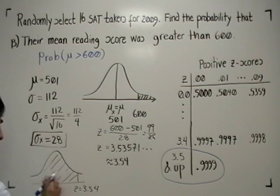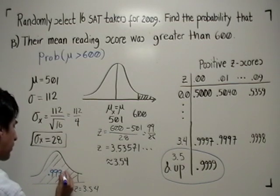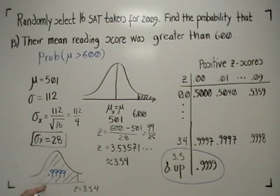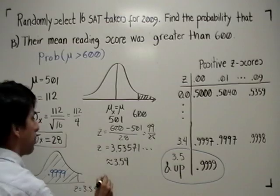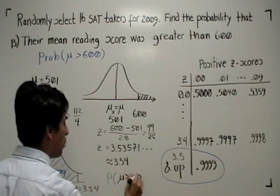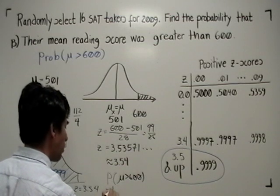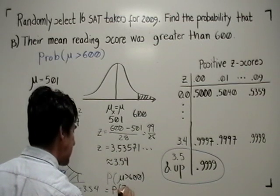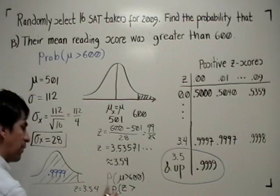So I am going to do that. I am going to say, okay, this area is 0.9999. However, I am not interested in that. I am interested in the probability that mu is greater than 600, which is equivalent to the probability that Z is greater than 3.54.